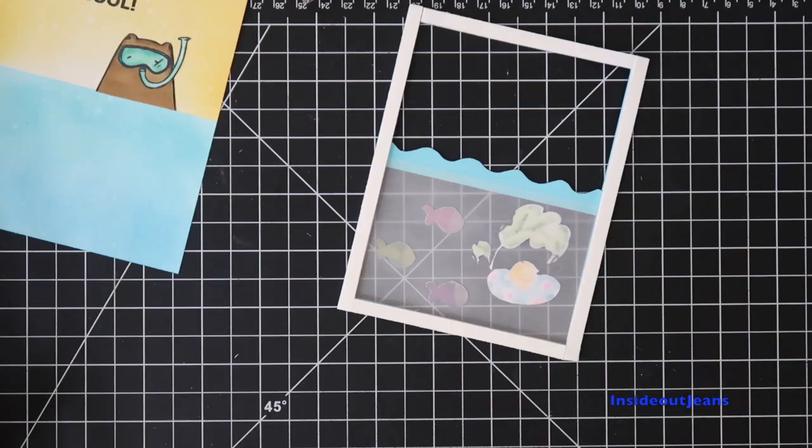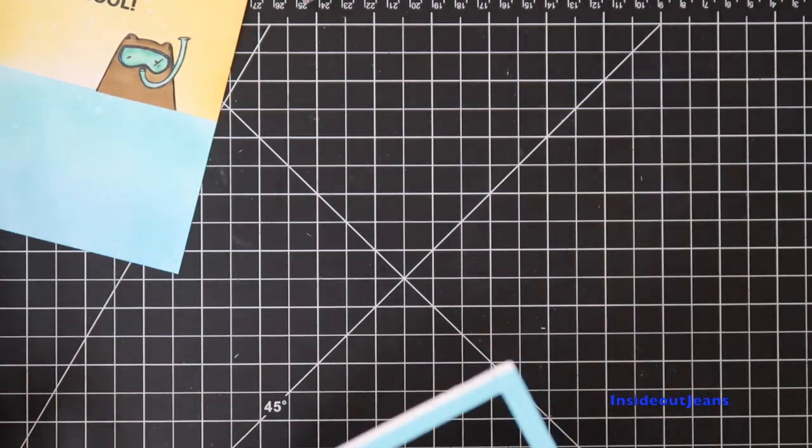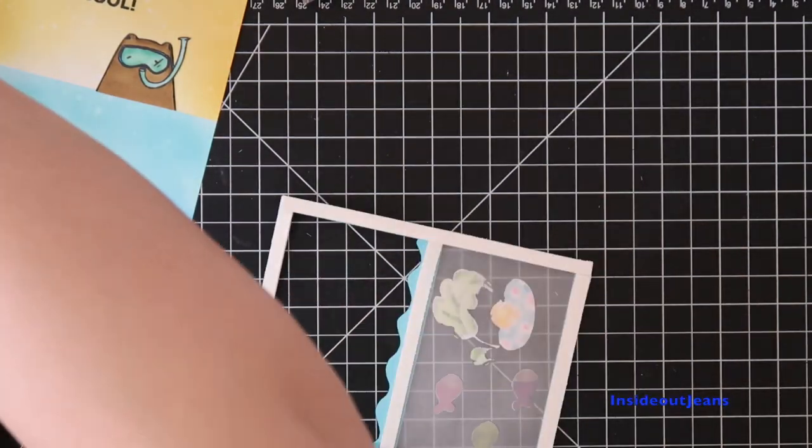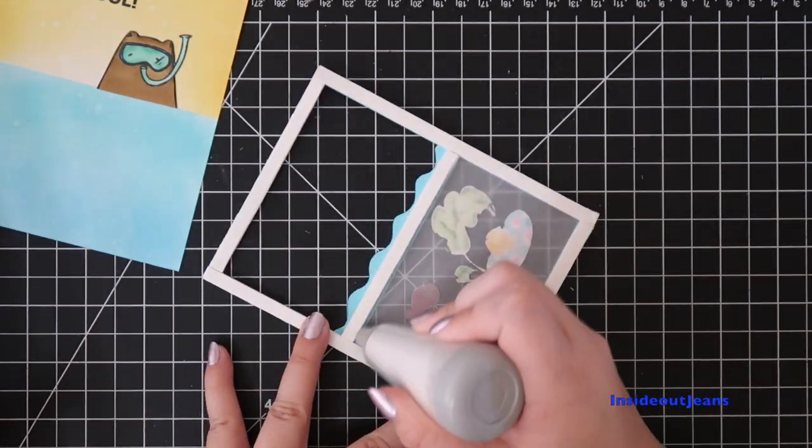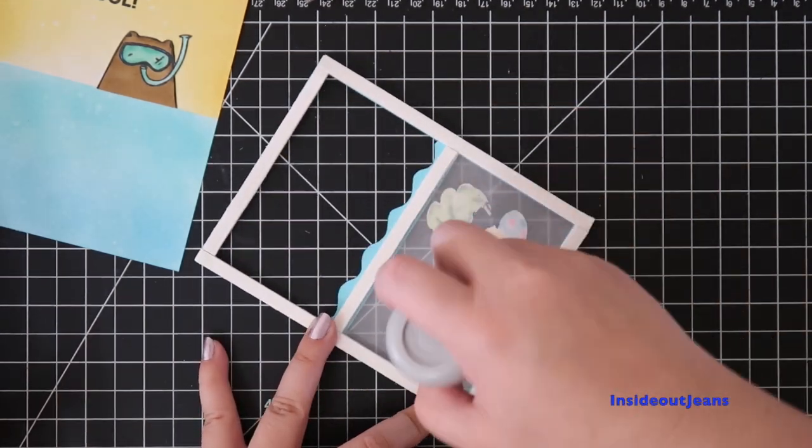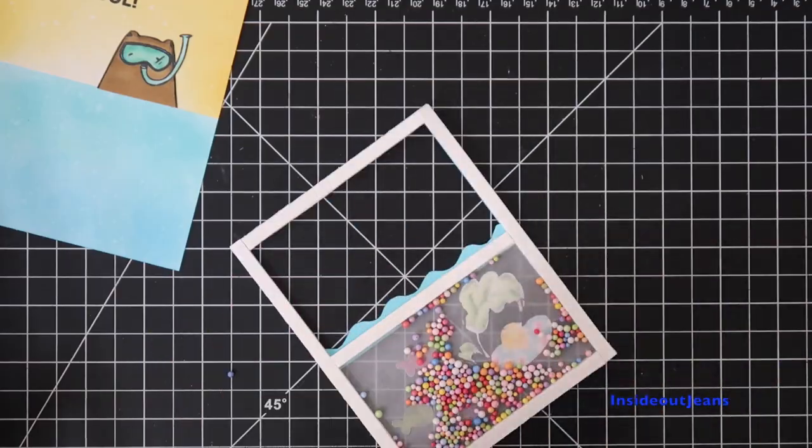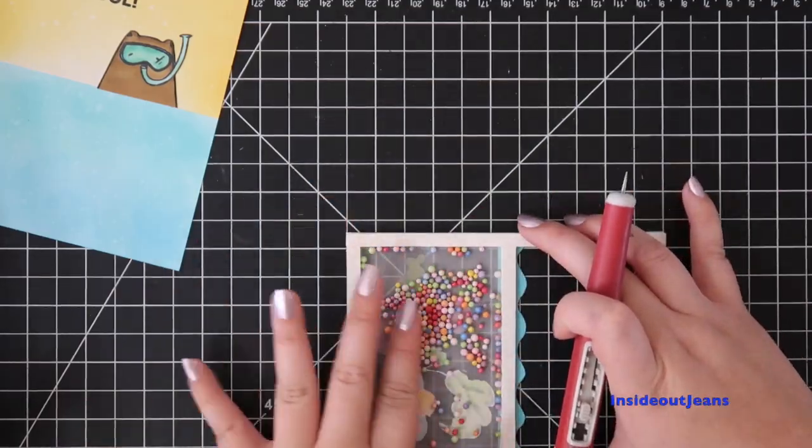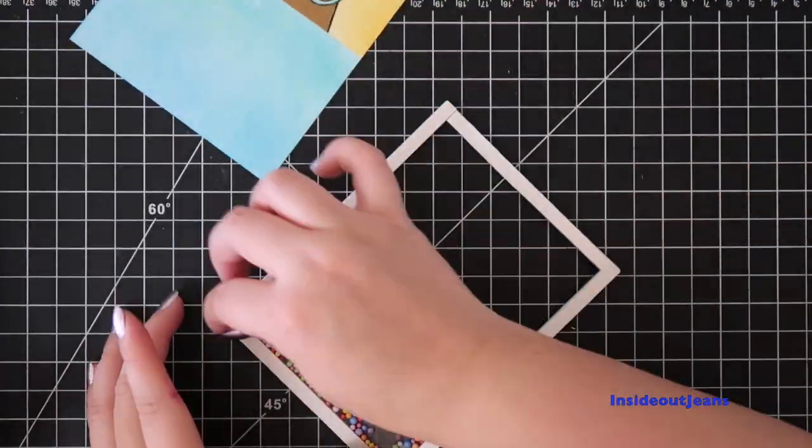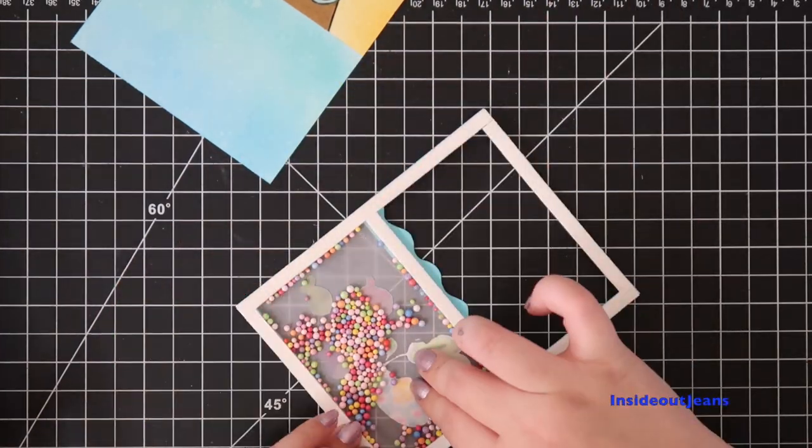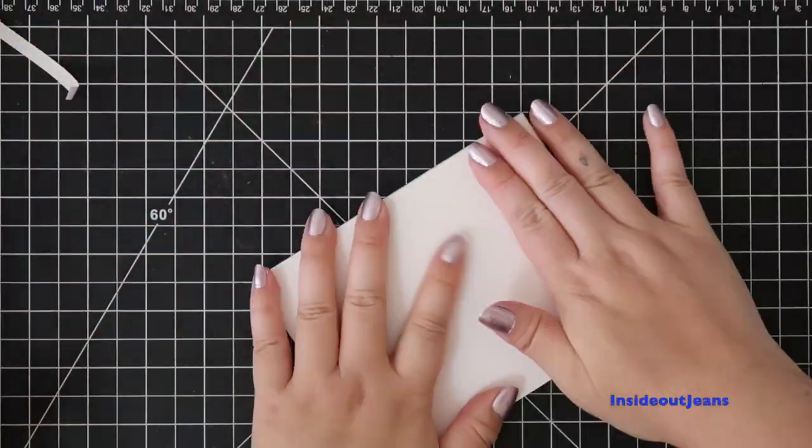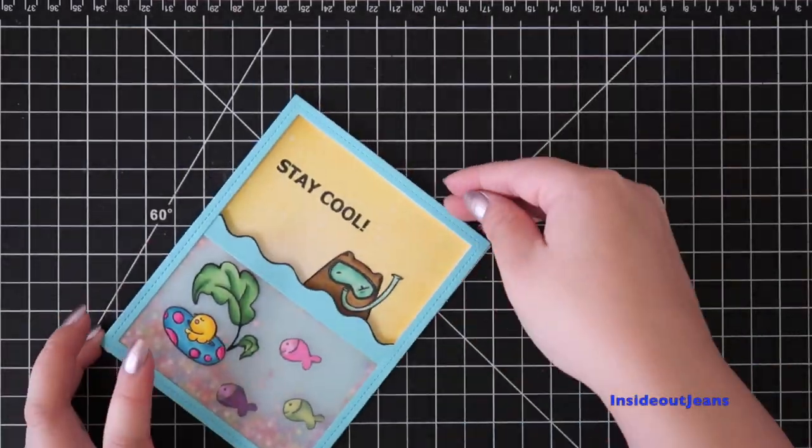I think that this little shaker pouch is perfect because it's a summery card and all the colors in this little pouch are super bright and colorful. I think it matches with the fish and the floaties. Once I add them in, I make sure that everything's moving freely and not stuck to the side where the foam tape is. I'll adhere the back to the card.